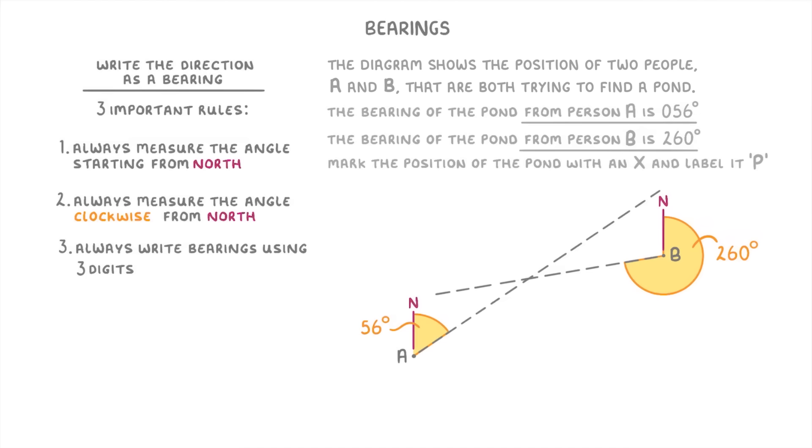And finally, because we know that the pond is on both of these lines, we know that it must be where they cross, which is just here. So we can label that point P, and that's it, we found the pond.